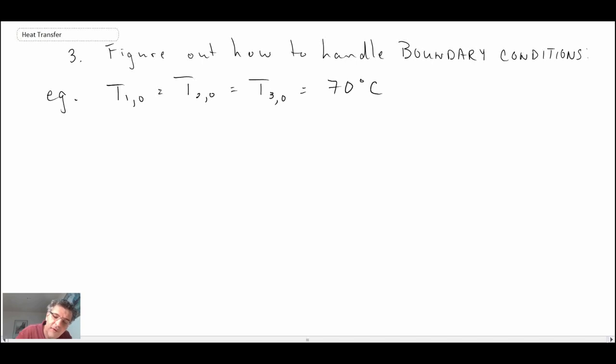An example for one of the boundary conditions could be the temperature at nodal location 1,0 equals 2,0 equals 3,0 equals 70 degrees C. That would be an example of how you would handle the boundary conditions on one of the sides.